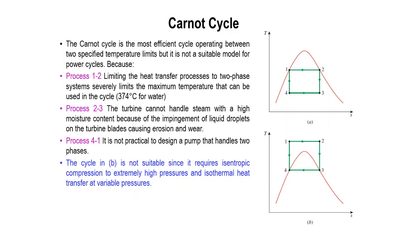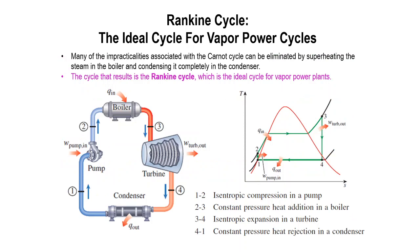Because of these problems with the Carnot Cycle, the idea is modified — we call it the Rankine Cycle. The Rankine Cycle is also known as the ideal cycle for vapor power cycles. Many of the impracticalities associated with the Carnot Cycle can be eliminated by superheating the steam in the boiler and condensing it completely in the condenser. The cycle that results is the Rankine Cycle, which is the ideal cycle for vapor power cycles.